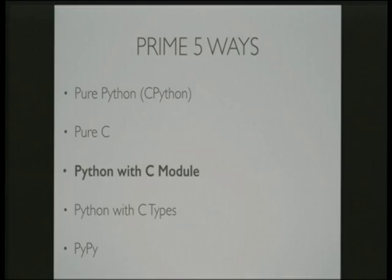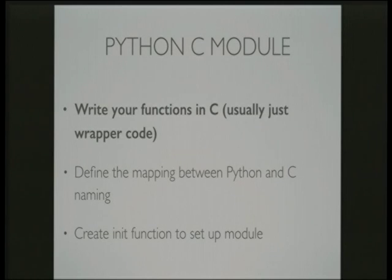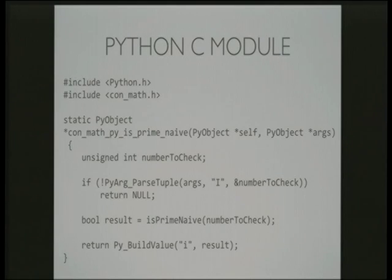The third implementation is in Python but with a module written in C. There are three things you need to do to build a Python C module: first, write your functions in C that Python is actually going to call; next, define a mapping between the Python naming and the C naming; and finally, write an init function to do the module setup. The wrapper code in C can be quite simple — if you've already got an implementation in C, basically all your wrapper code does is transform values from Python into C and vice versa. I've done all my C code in a single file called conmathpy.c.